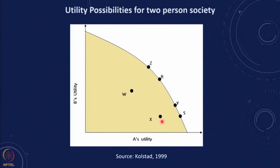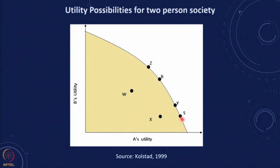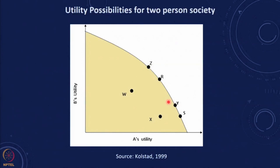Similarly, comparing X and R: A's utility in X and R are the same, so A is indifferent, but B's utility for R is greater than for X. So R is Pareto preferred to X. Comparing X and S: A's utility in S is greater than in X and B's utility remains the same, so S is Pareto preferred. This curve represents the locus of all best Pareto preferred points — the Pareto frontier.